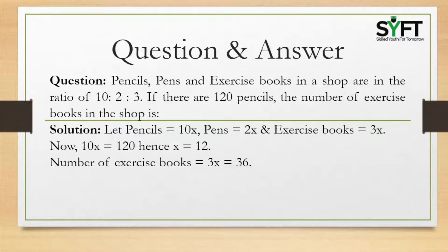Question: Pencils, pens and exercise books in a shop are in the ratio 10 is to 2 is to 3. If there are 120 pencils, what is the number of exercise books? Solution: Let pencils equal 10x, pens equal 2x, and exercise books equal 3x. Now 10x is equal to 120, so x is equal to 12. Then the number of exercise books equals 3x, that is 3 into 12 equal to 36.